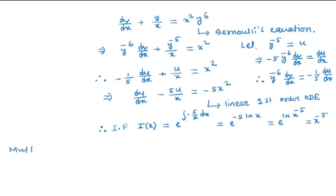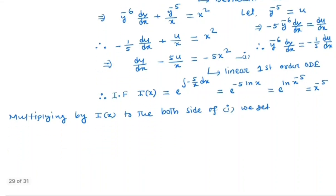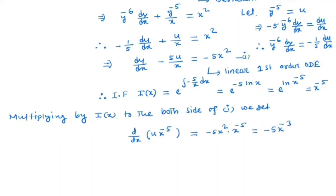Multiplying both sides of the equation by x to the power minus 5, we get d/dx of u times x to the power minus 5 is equal to minus 5x squared times x to the power minus 3, which simplifies to minus 5x to the power minus 3.